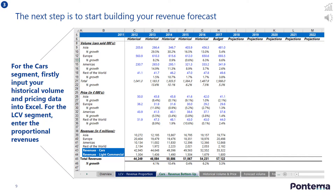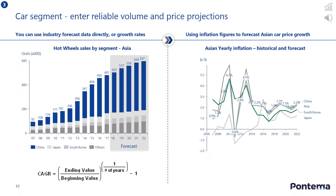The next step is to use Excel or another appropriate spreadsheet to start building the revenue forecast. For the cars segment, firstly input your historical volume and pricing data into Excel. For the light commercial vehicle segment, enter the proportional revenues. Once the historical data has been added, you now need to add reliable volume and price projections. There are several possible sources you can use to forecast the revenue drivers, such as internal organization projections, industry databases and analyst estimates.